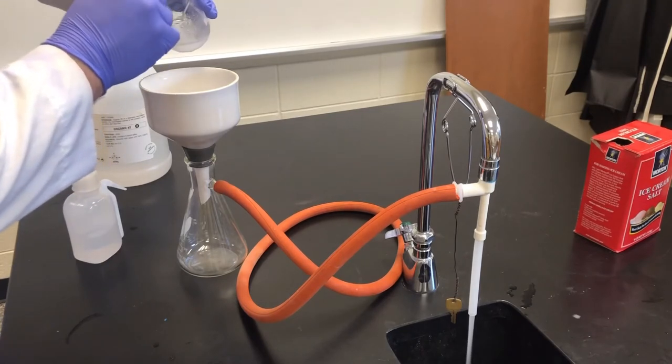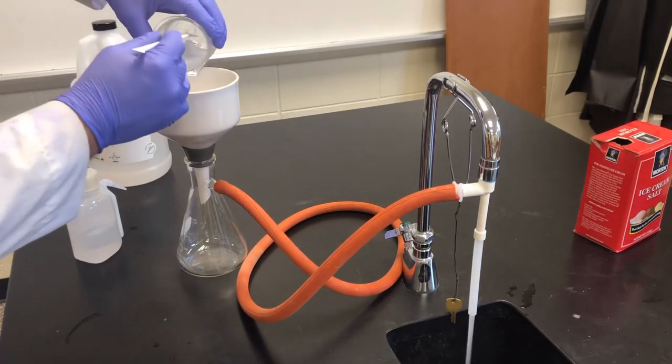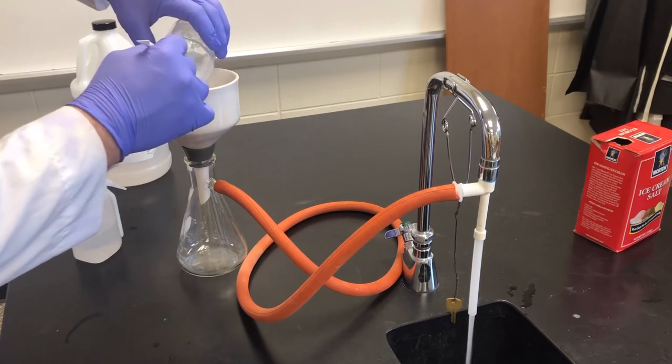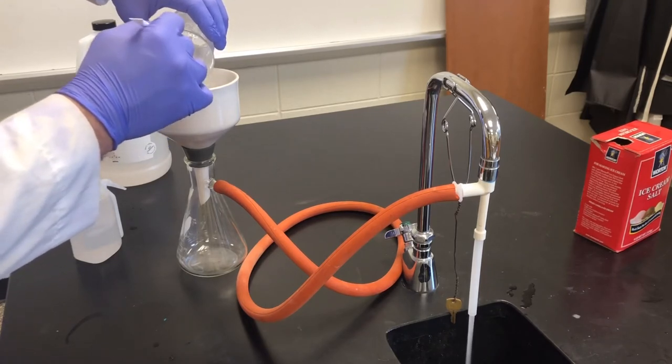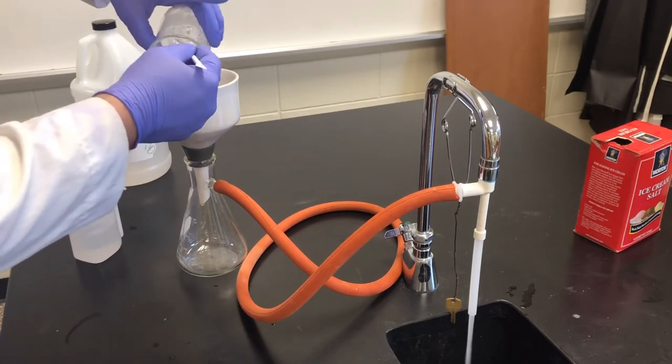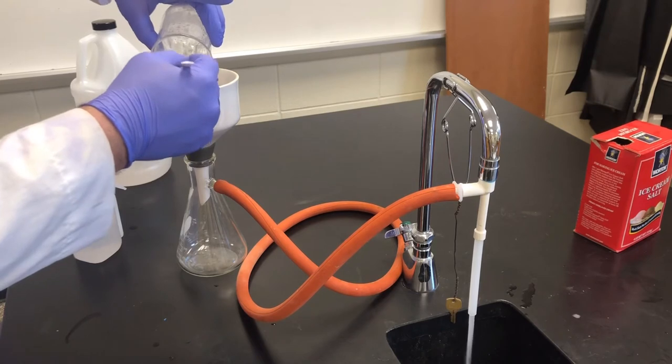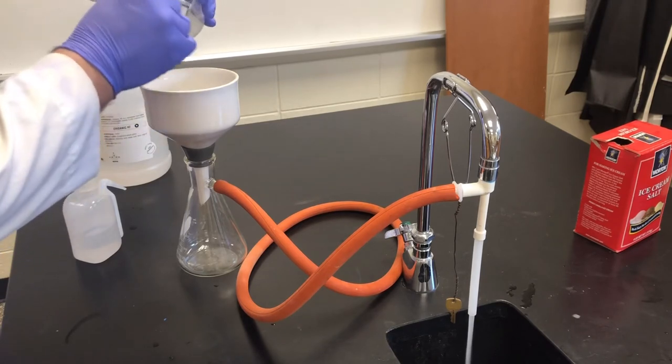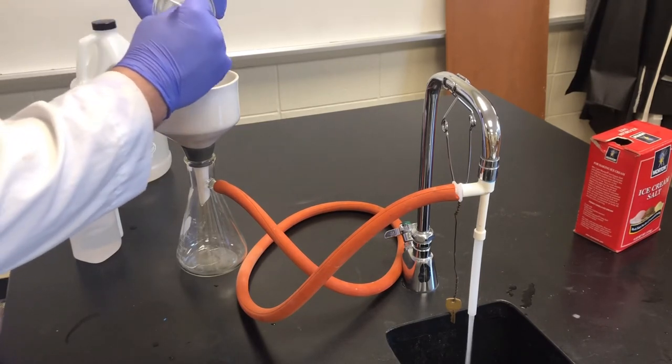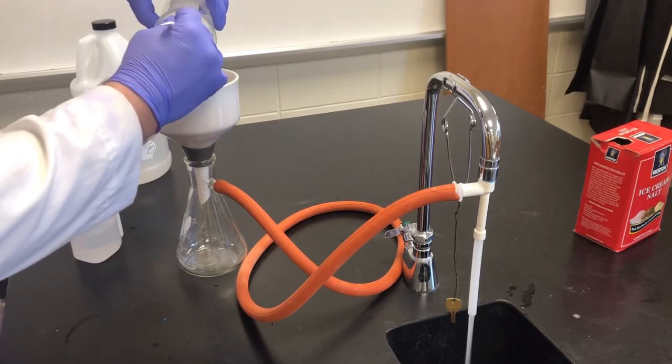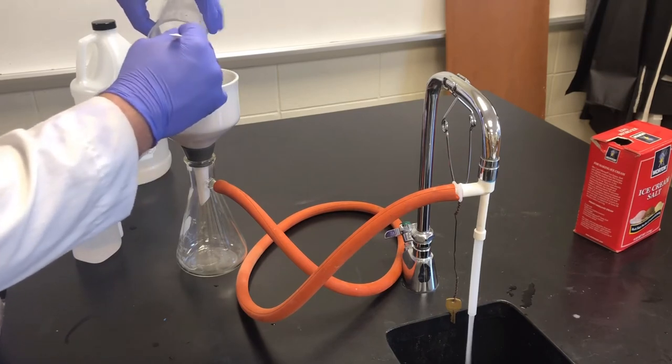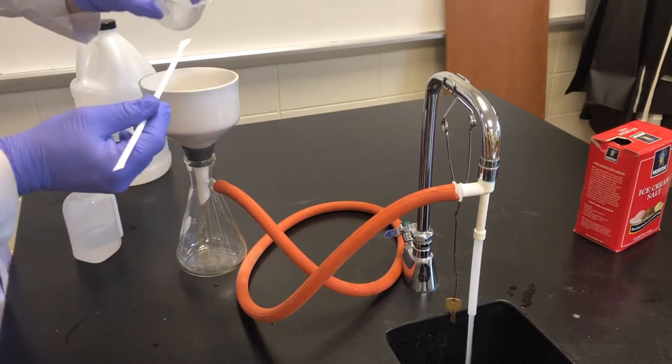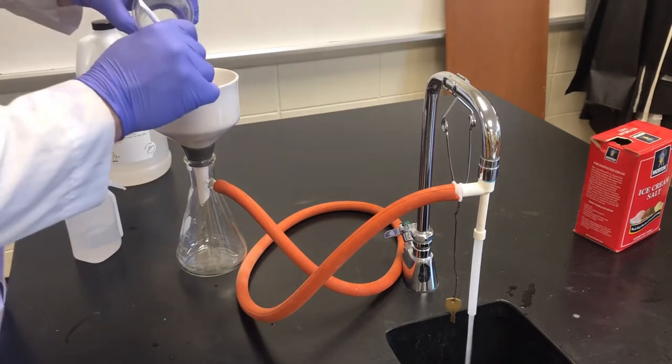As we turn this on, I'm going to try to get this into the very center so that it doesn't leak around any edges if possible. Remembering that if we can get every bit of this, that is going to improve our efficiency or our percent yield. The more we can get out is going to improve our percent yield. That is about as much of this I can get out just using the spatula by itself.